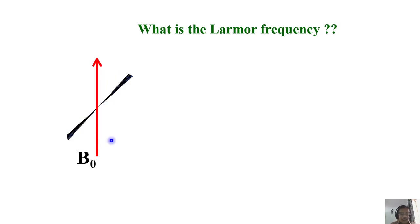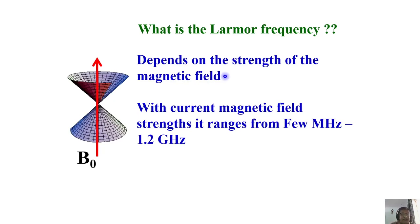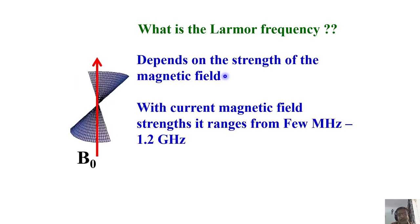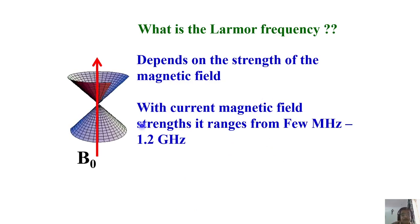The nuclear magnetic moments are precessing around the magnetic field, but what is this Larmor precession frequency? It depends on the strength of the magnetic field — higher the magnetic field, higher the precession frequency. The Larmor precession frequency increases linearly with the external magnetic field B-naught. Today we have spectrometers of various frequencies, up to even 1.2 gigahertz. So if I say the spectrometer frequency is 1 gigahertz or 1.2 gigahertz, that is the precession frequency.